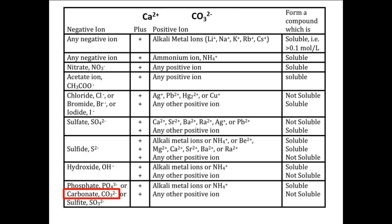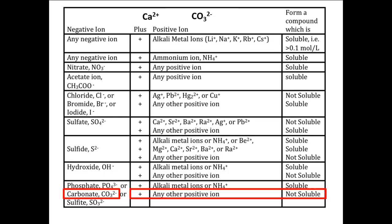Where is the calcium ion? The first line says alkali metal ions or ammonium ion. Remember that the alkali metal ions are listed in the first row, and Ca2+ is not listed there, so that means calcium is one of the any other positive ions, so calcium carbonate is not soluble.